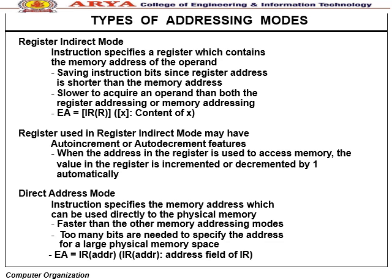Register indirect mode — the instruction specifies a register containing the memory address of the operand; saves instruction bits since register address is shorter than memory address; slower to acquire operand than register or direct memory modes. The register used may have auto-increment or auto-decrement feature. Direct address mode — the instruction specifies the memory address directly usable to access physical memory; faster than other memory addressing modes but requires many bits for large memory spaces.